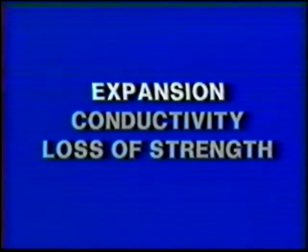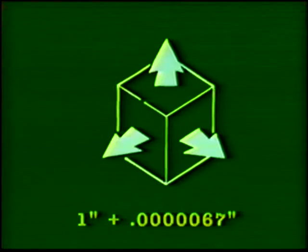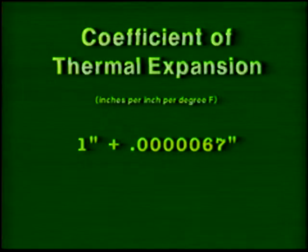First, we will consider expansion. Heating causes metal to expand; cooling causes metal to contract. The change in size is in all directions. A one-inch cube of steel will expand a very small amount in all directions if heated one degree Fahrenheit. This amount of dimension change per inch of size for each degree of temperature change is called the coefficient of thermal expansion.